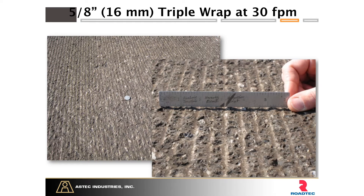This is what a five-eighths inch standard triple wrap drum looks like at 30 feet per minute — a milled surface that's fairly uncommon for the wrong reasons, because most machines with a five-eighths inch drum don't travel at only 30 feet per minute; it's usually a much higher rate. We'll talk about how machine speed, drum configuration, and pattern are interrelated and what that does to our surface.